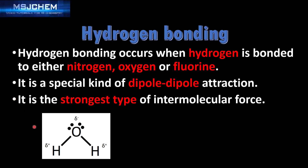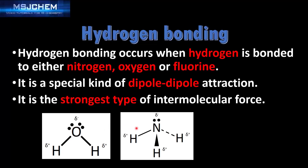Here are some examples of molecules that have hydrogen bonding. The first example is H2O — as you can see, there is a hydrogen bonded directly to an oxygen atom. The next example is ammonia, NH3, where we have a hydrogen atom bonded directly to a nitrogen atom.